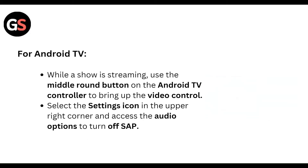For Android TV, while a show is streaming, use the middle round button on the Android TV controller to bring up the video controller. Select the settings icon in the upper right corner and access the audio option to turn off SAP.